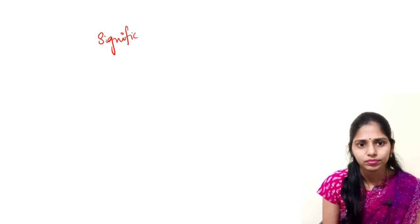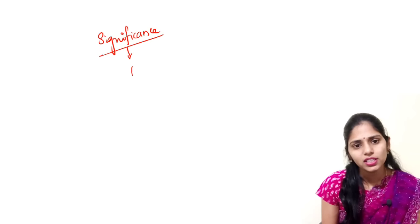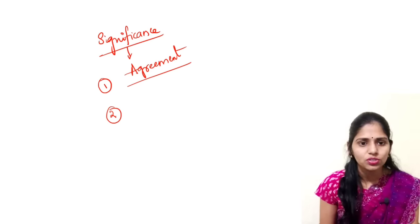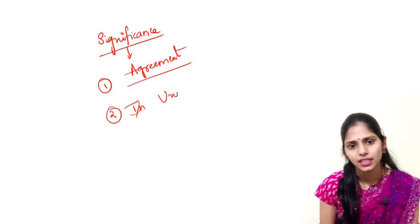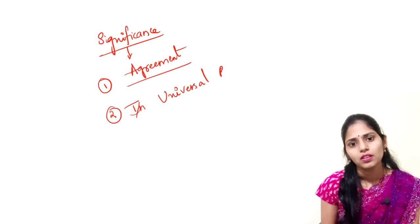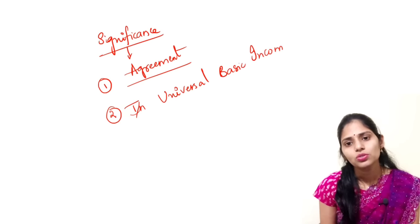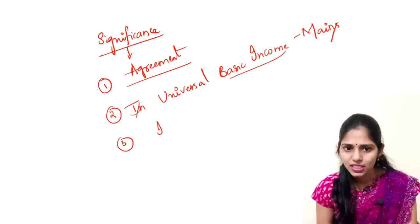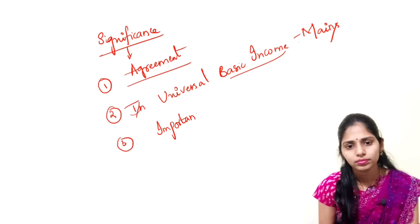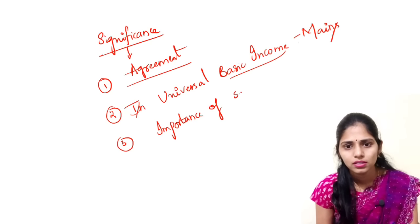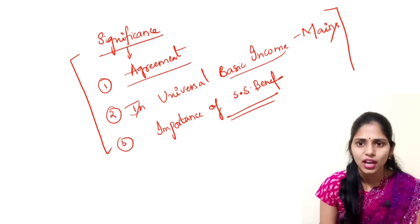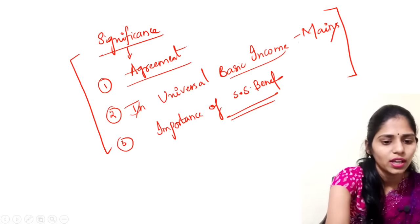The important dimensions to study from this article: first, what is the significance of this agreement and how will it be helpful? Second, what is the need for universal basic income and its importance — you can get a mains-based question from here. Third, the importance of social security benefits overall. These are important dimensions to think about from this article point of view.